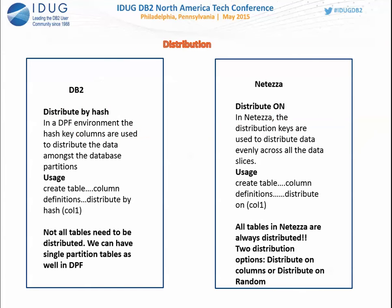How is data distributed in Netezza across SPUs? The hashing algorithm is very similar to DB2. In DB2, you say DISTRIBUTE BY HASH and give a column name; the hashing algorithm outputs a database partition number. Netezza works the same way — you give distribution keys and the output is a specific SPU where your data goes. In DB2 you say DISTRIBUTE BY HASH (column_name); in Netezza you say DISTRIBUTE ON column_name. The data distribution algorithms are very similar.